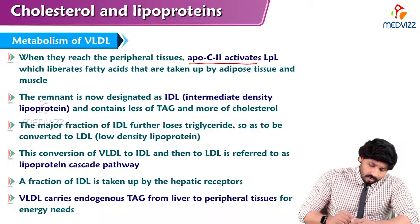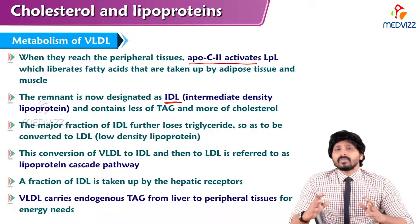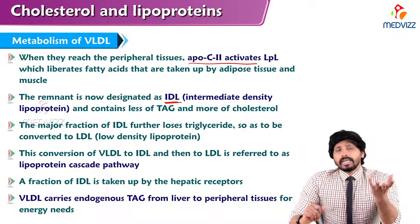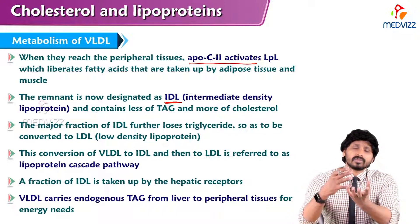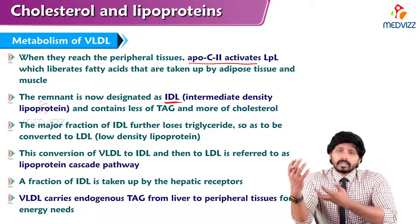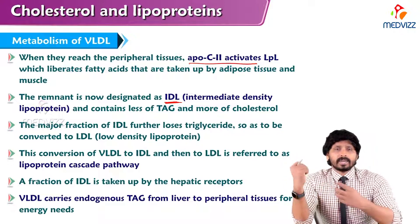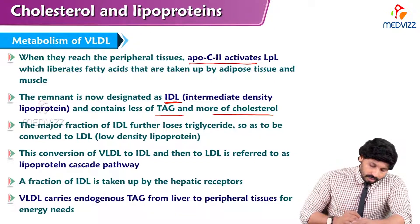The remnant is now designated as IDL — intermediary density lipoprotein. That is the reason why we are not discussing IDL separately. When VLDL is produced in the liver carrying triglyceride, the moment it reaches circulation and enters extrahepatic tissues, the triglyceride content will be decreased. Now, as it contains a lesser amount of triglycerides, it is known as intermediary density lipoprotein, and it contains less TAG and more cholesterol.